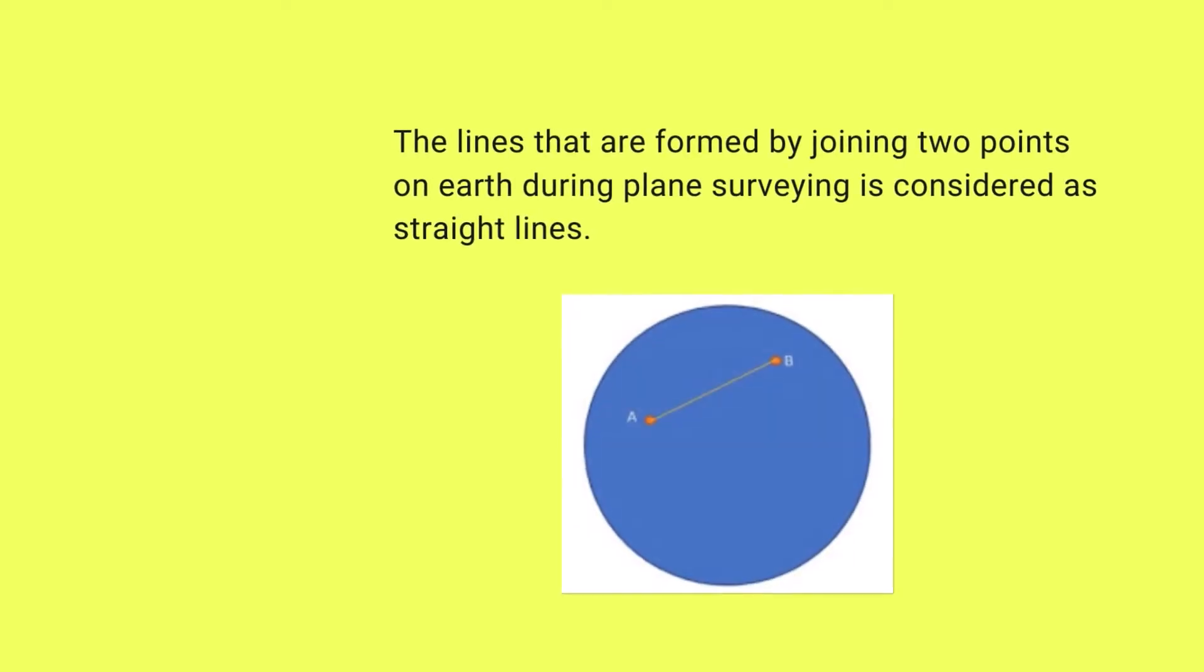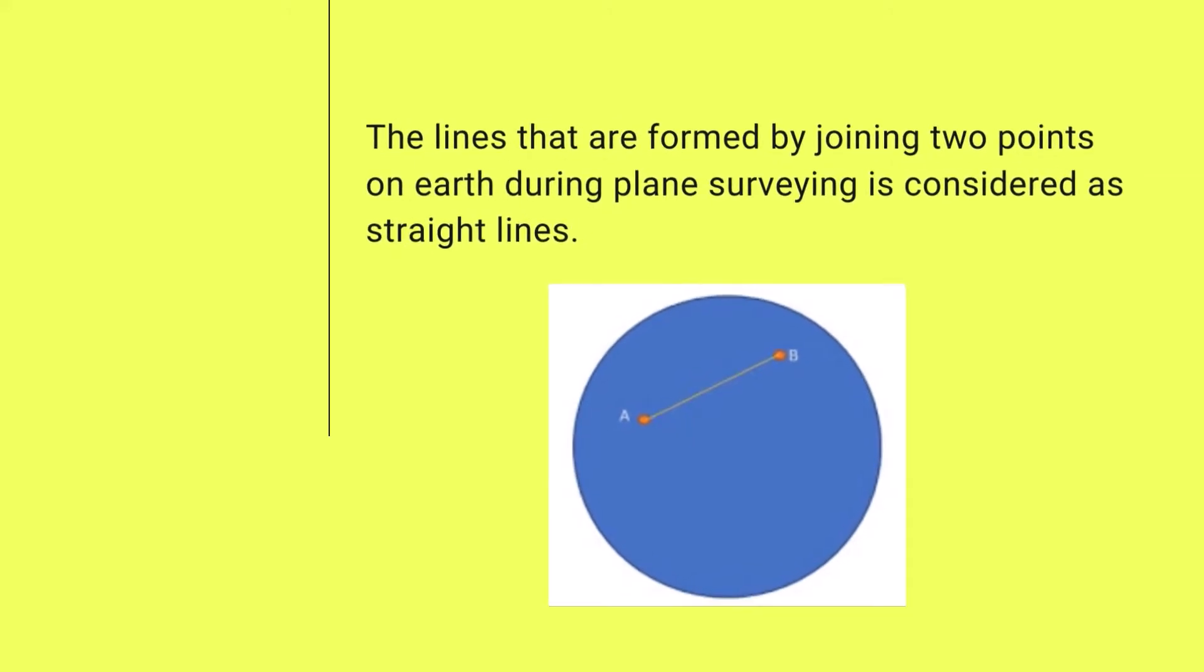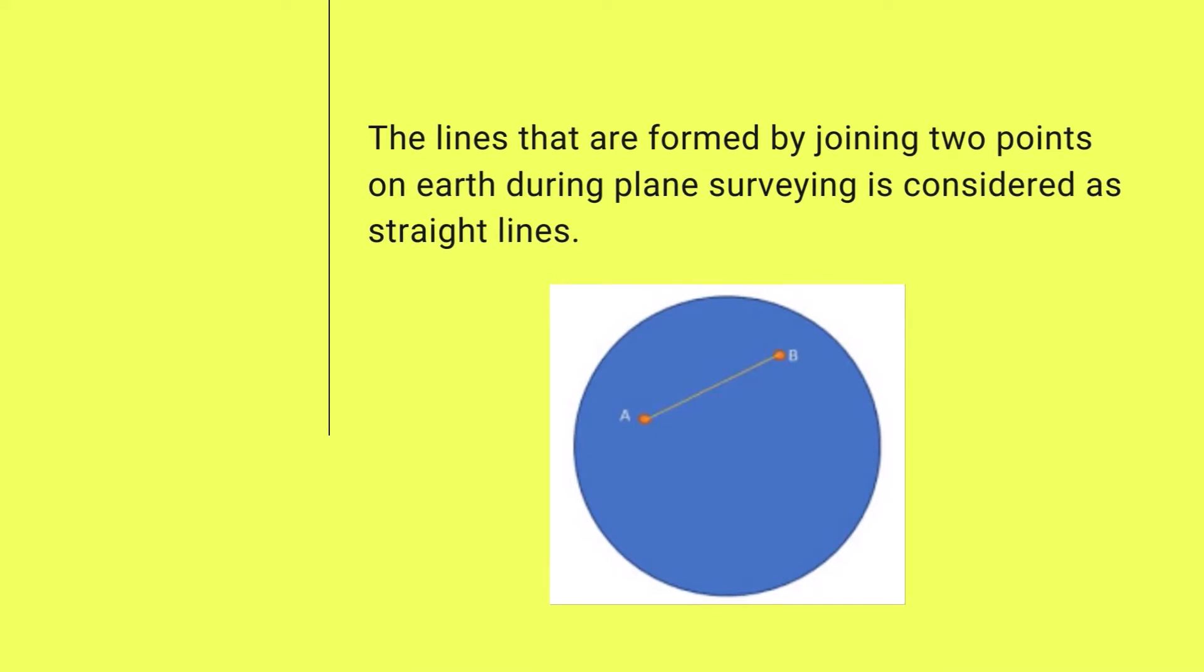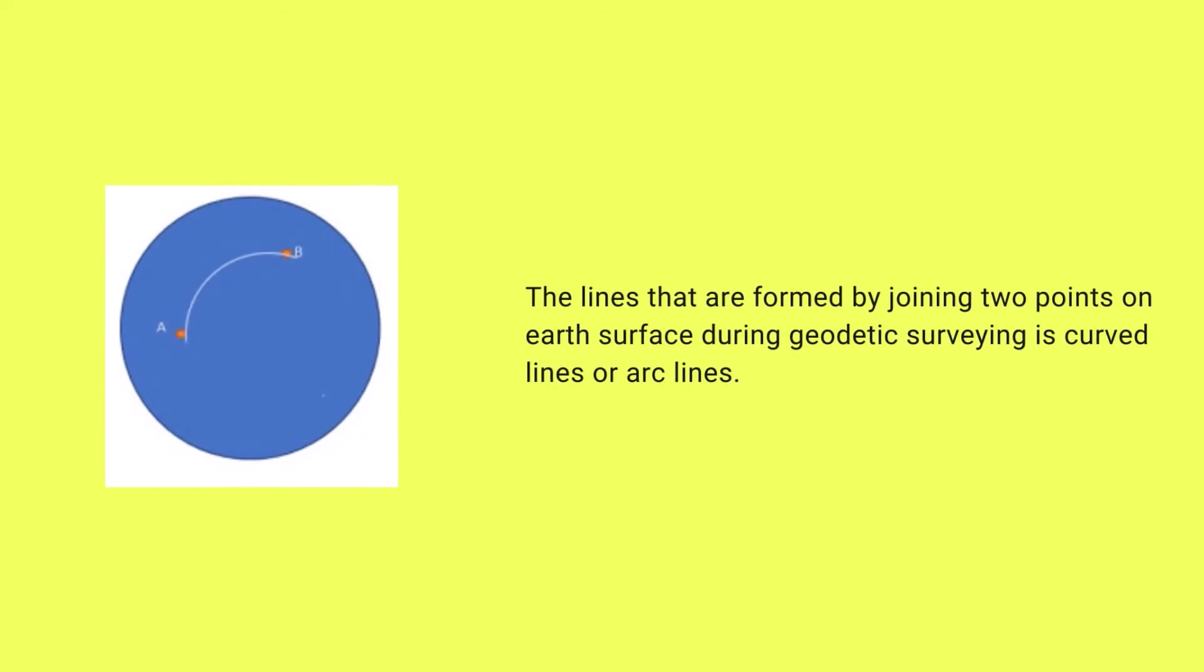The lines that are formed by joining two points on earth during plane survey are considered as straight lines. AB is a straight line formed by points A and B. In geodetic survey, the lines that are formed by joining two points on earth's surface can either be curved lines or arc lines.